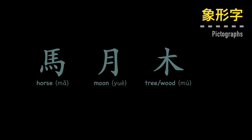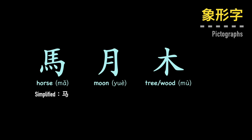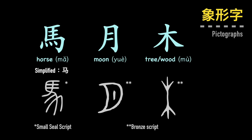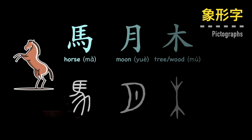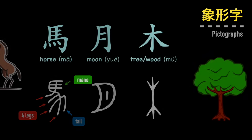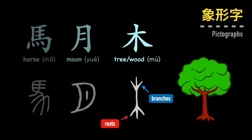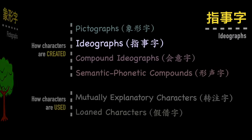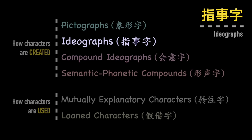If you look at characters like ma, yue, or mu, especially in their ancient forms, you can easily see that they represent ideas visually. Pictographs are usually the most ancient characters and can only represent simple, concrete ideas. The second category is ideographs — zhi shi zi.